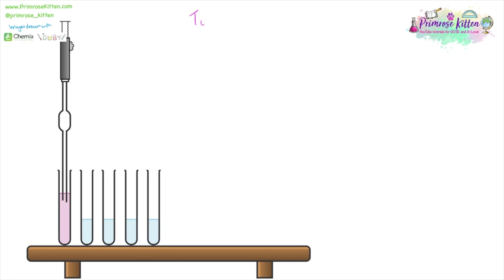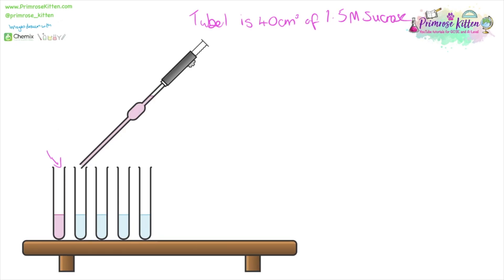We're going to start off with a concentrated solution in test tube one. Actual numbers used here don't matter that much, this is just an example. But say that tube one is 40 cm³ of 1.5 molar sucrase. Off of this volume, move to tube number two.